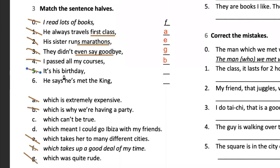Number five: 'It's his birthday, which meant I could go visit with my friends' — letter D. Number four goes to letter D as well. But this is more like a puzzle, you can play between them. And the last option is letter C: 'He says he's met the king, which can't be true.' He's a liar. Thank you very much. Now we do exercise four.